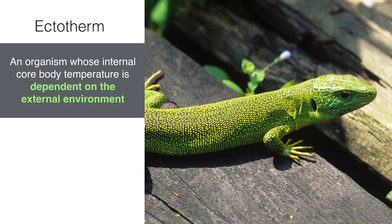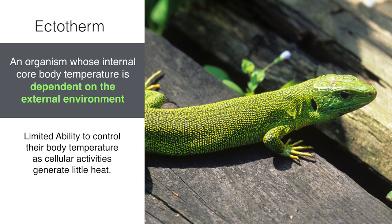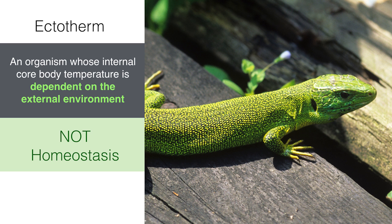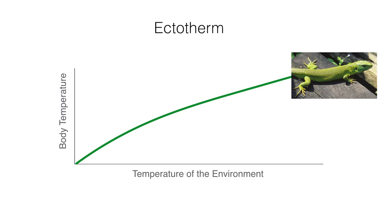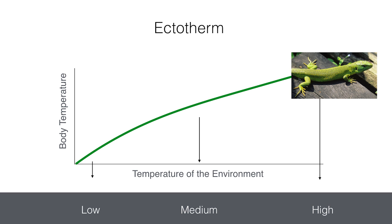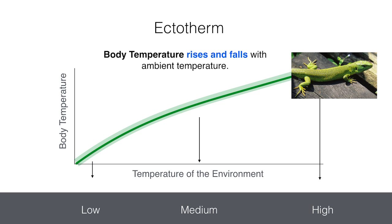With endotherms covered, let's now have a look at what ectotherms are. An ectotherm is an organism whose internal core body temperature is dependent on the external environment. Ectotherms have a limited ability to control their body temperature as cellular activities in their body generate little heat. Unlike endotherms, an ectotherm's internal core body temperature is not controlled through homeostasis. An example of this would be a lizard or a gecko. Let's visualise this using a graph. The wavy line has been replaced by a somewhat linearly increasing line, meaning that as the environment's temperature increases, an ectotherm's body temperature will also increase. If it's cold outside, the ectotherm's body temperature will be cold; if it's hot outside, the ectotherm will also be hot. To sum it up: an ectotherm's body temperature rises and falls with the ambient temperature.